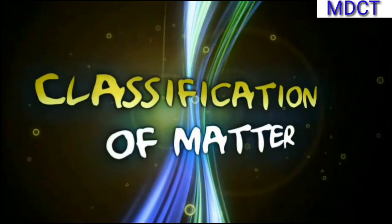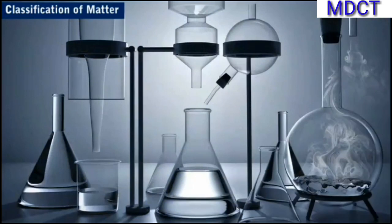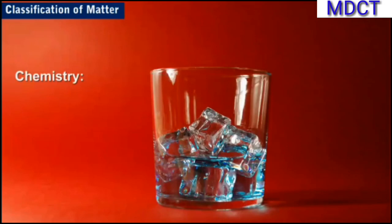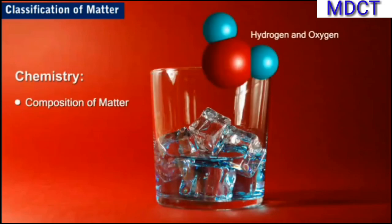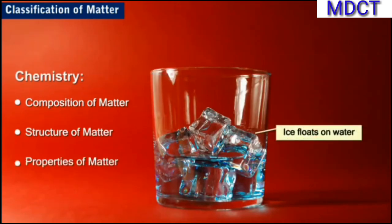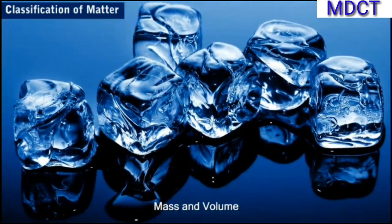Classification of Matter. Before studying about classification of matter, let us first study about chemistry. Chemistry is the branch of science that deals with the study of the composition, structure, and properties of matter and changes that matter undergoes. Matter is defined as anything that has mass and occupies space.